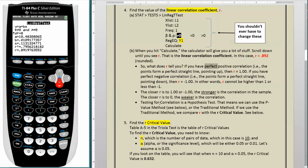Testing for correlation is a hypothesis test. That means we can use the p-value method, which we'll talk about a little bit below, or the traditional method. If we use the traditional method, we compare R with the R critical value. And we're going to do that next in number 5.